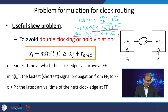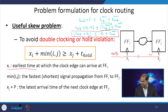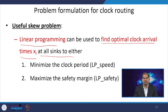For worst case hold conditions, x_i should arrive early and x_j should arrive late, checking the same rising edge of the clock to see whether a race condition is happening. This creates the worst case condition for hold violation — early path to x_i and late path to x_j. We will now discuss the useful skew problem, applying linear programming to find the optimal clock arrival times x_i at all sink nodes.